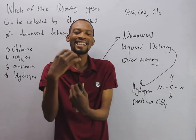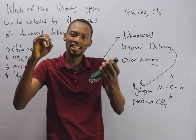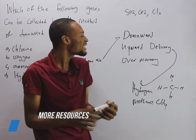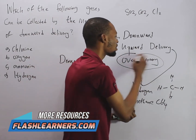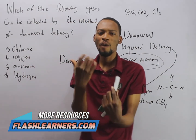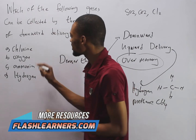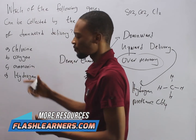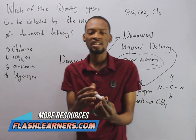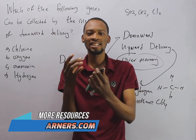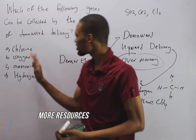When a gas is soluble in water and has the same density as air, it is collected over mercury. So if you ask why oxygen is collected over mercury, it is because oxygen is soluble and has the same density as air.